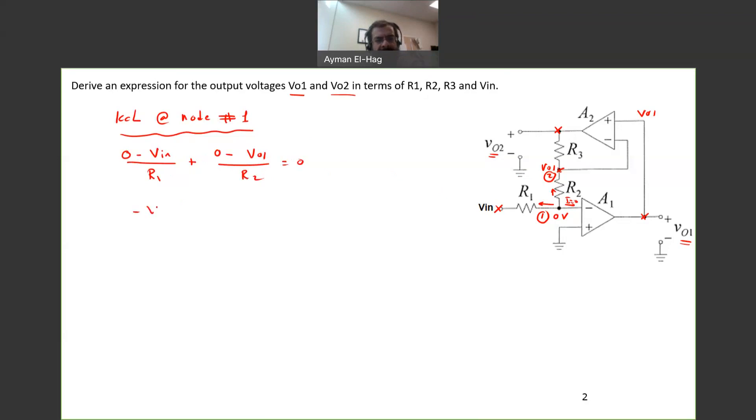So 0 minus Vn divided by R1 plus 0 minus V output 1 divided by R2 equal to 0. So minus Vn over R1 equal to Vout 1 over R2. So from this, you can say that V output 1 is equal to minus R2 over R1 times Vn. And this is the first requirement.